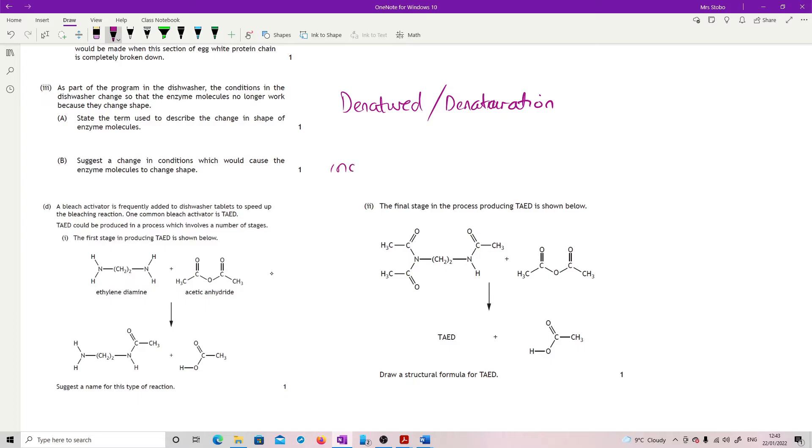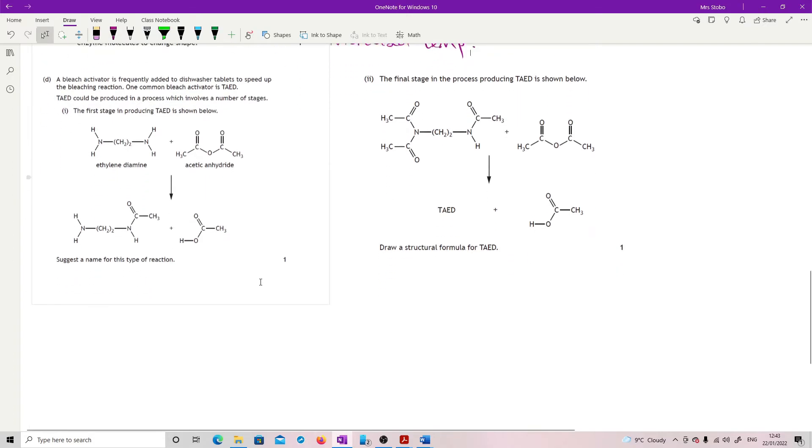Suggest a change in conditions which would cause the enzyme molecules to change shape. What I'm expecting is increased temperature. Because your other ones for denaturing is like change drastically away from the optimum pH, and you're not going to change the pH inside your washing machine.